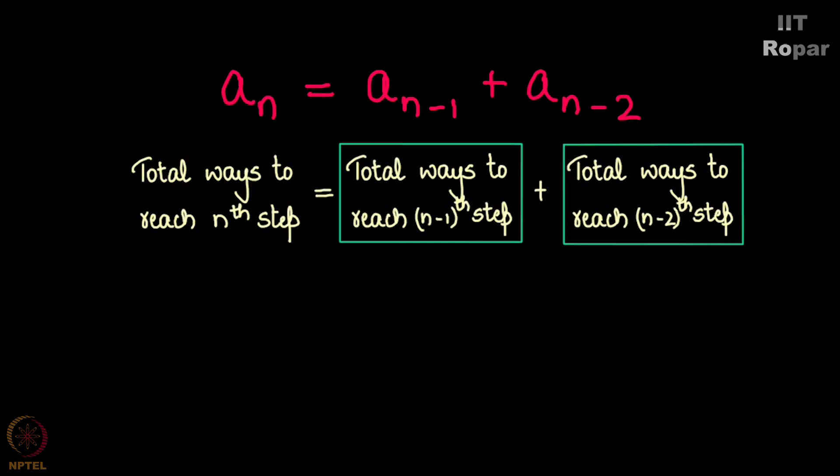So if you want to compute a_10, it will be a_9 plus a_8. But you know a_9, recursively speaking, is a_8 plus a_7, and then your a_8 is a_7 plus a_6.